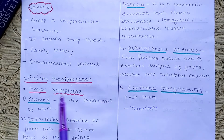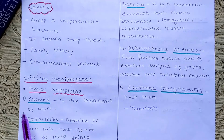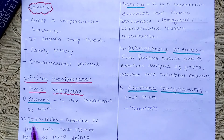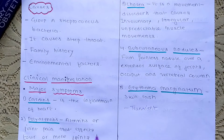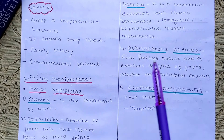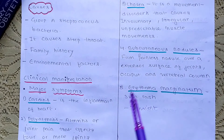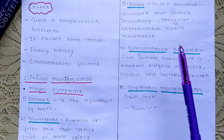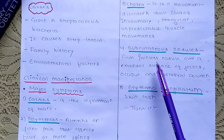Clinical manifestations — major symptoms of rheumatic fever include: Carditis, which is inflammation of the heart. Polyarthritis, which is joint pain affecting 4 or more joints simultaneously. Chorea, which is a movement disorder that causes involuntary, irregular, and unpredictable muscle movements.